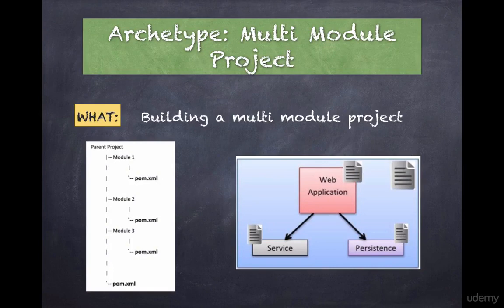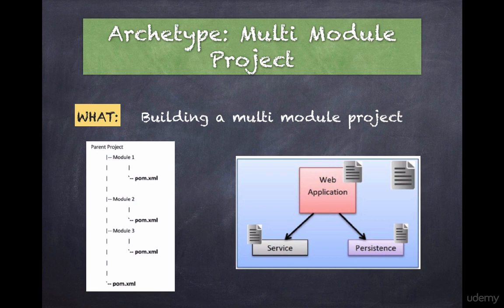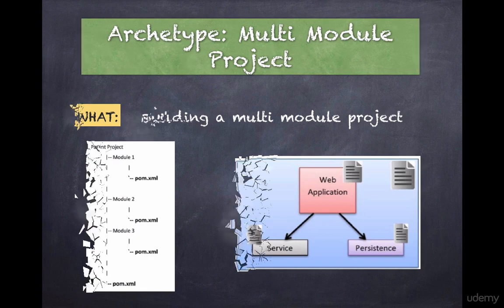We are going to see how to build a multi-module project using an existing archetype. Our project is going to have a parent module and two child modules, each with their own pom.xml, plus the parent's own pom.xml — so four pom.xml files in total. We'll split a large project into a web application for the UI, a service project for the service layer, and a persistence project for the repository layer.